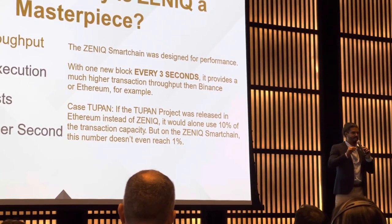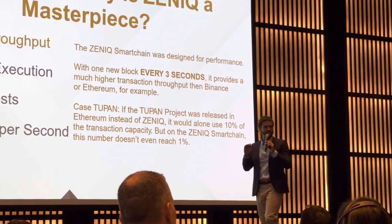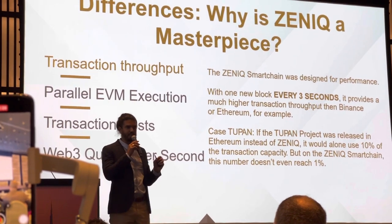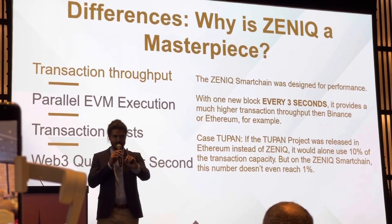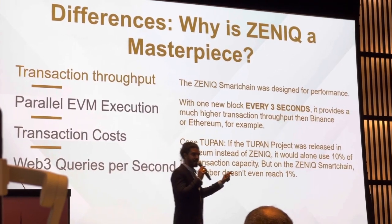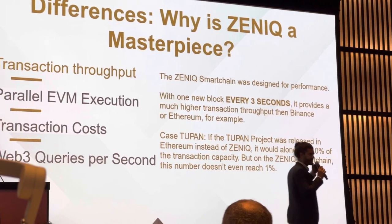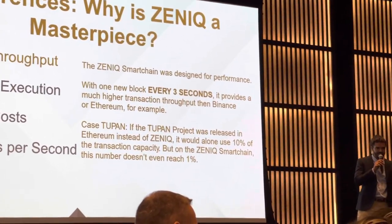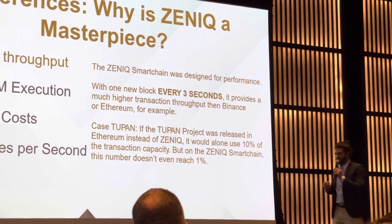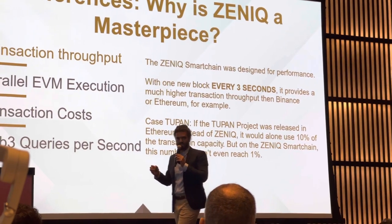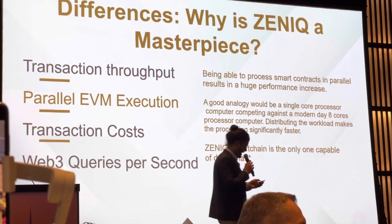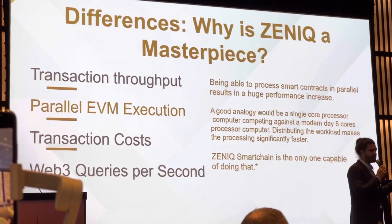Every three seconds, ZNIC produces a new block. Ethereum does it on average every 13 seconds. As a good example, we recently implemented a Topan Minting project. If we tried to do this on the Ethereum network, the whole Ethereum network would need to dedicate 10% of its entire capacity just to run that project. Do you know how much we are occupying on the ZNIC Smart Chain? Not even 1%. The main competitor would lose 10% of its throughput capacity, and it doesn't even scratch us.